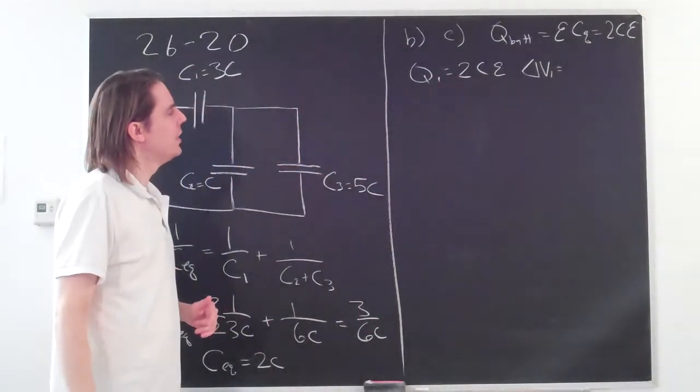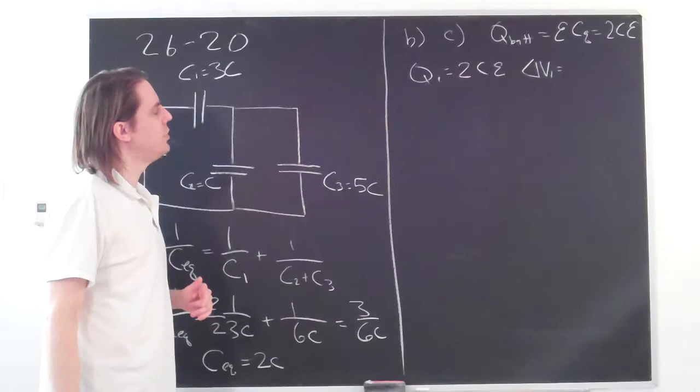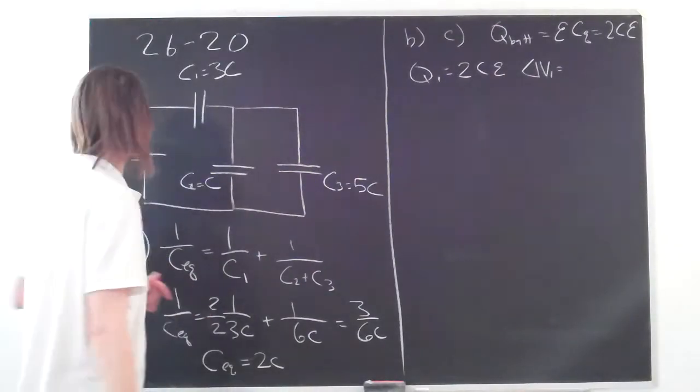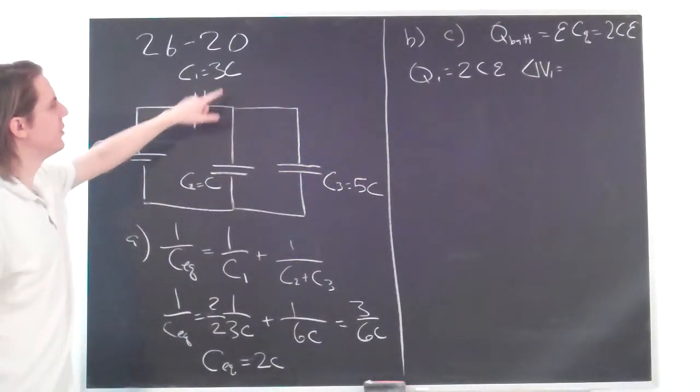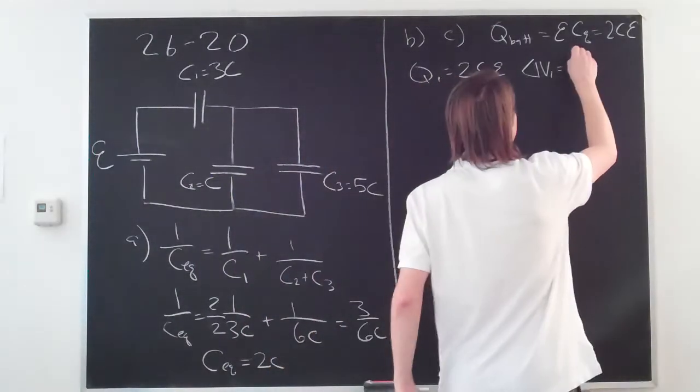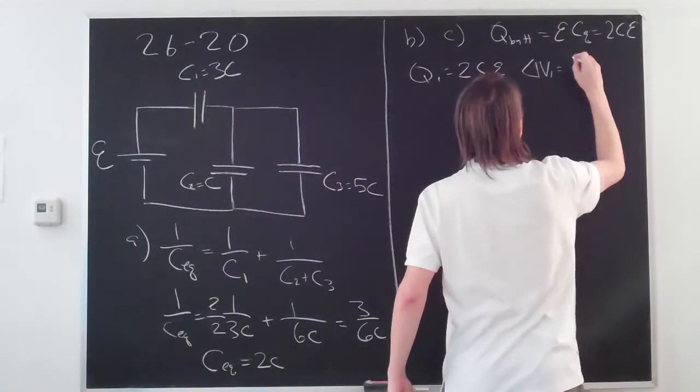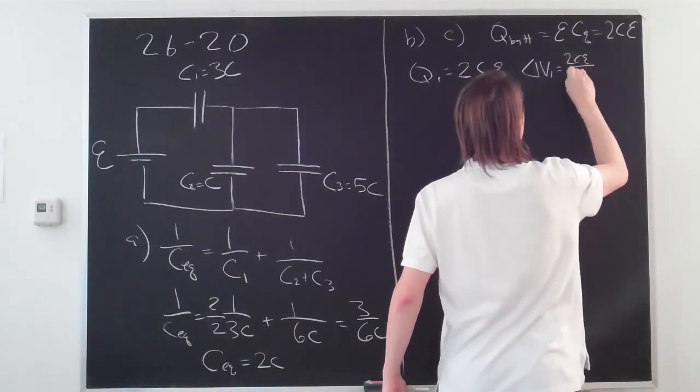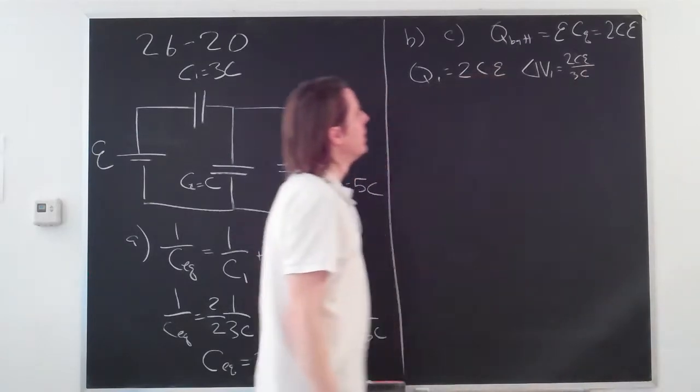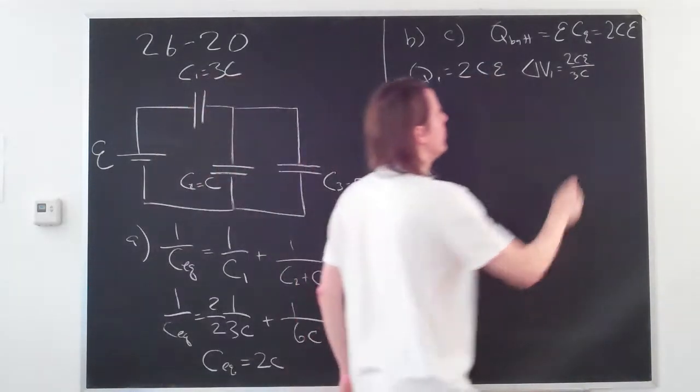CV equals Q. So it's just its charge, Q, over its capacitance. The capacitance, which capacitance for C1 is 3C. So it's 2CE over 3C, which is two-thirds E.